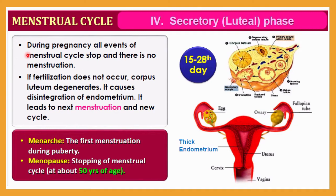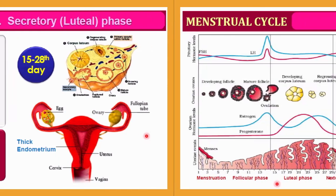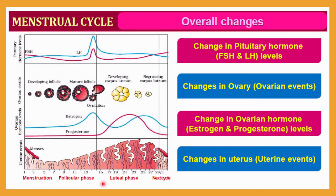During pregnancy, all events of the menstrual cycle stop and there is no menstruation. If fertilization does not occur, the corpus luteum degenerates, causing disintegration of the endometrium, which leads to the next menstruation cycle and initiates a new cycle. To summarize: menarche is the first menstruation at puberty, and menopause is the stopping of menstruation at around 50 years of age.